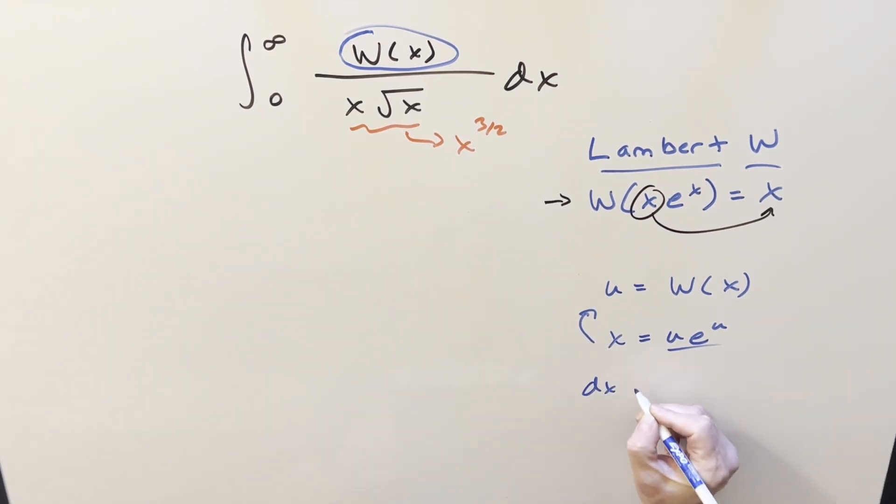Now that we've solved for our x, we can just go ahead and take a derivative. So doing that, we get dx. This is going to be product rule. Derivative of u is just 1, e to the u plus, keep this, derivative of e to the u is e to the u, du. Let's factor out the e to the u, and we get e to the u times u plus 1, du, and that's going to be our dx.